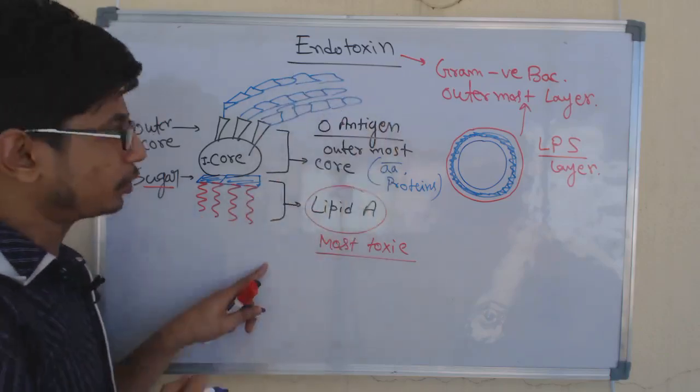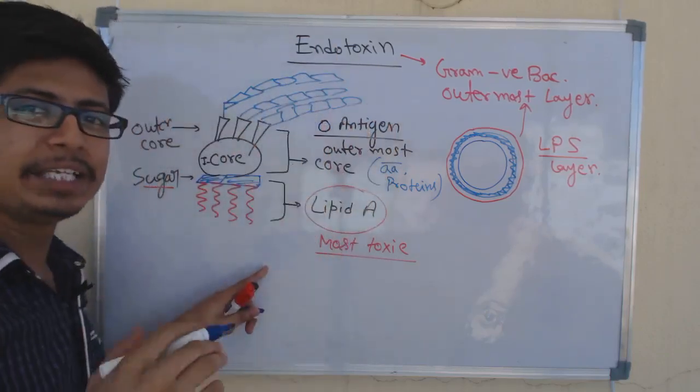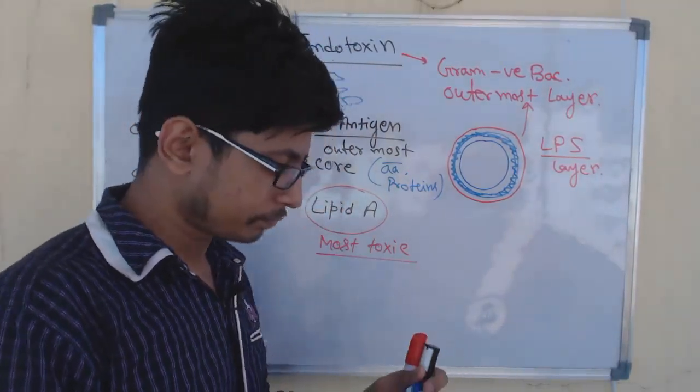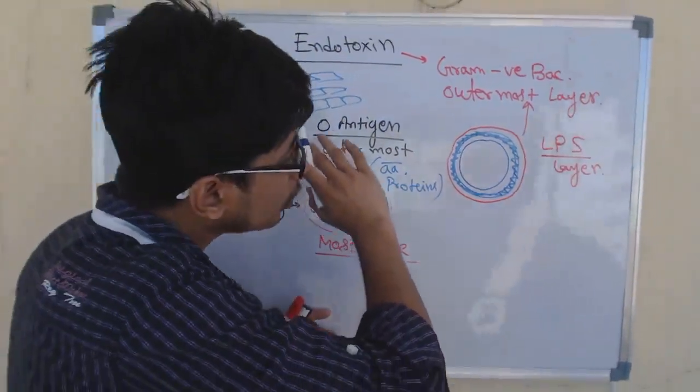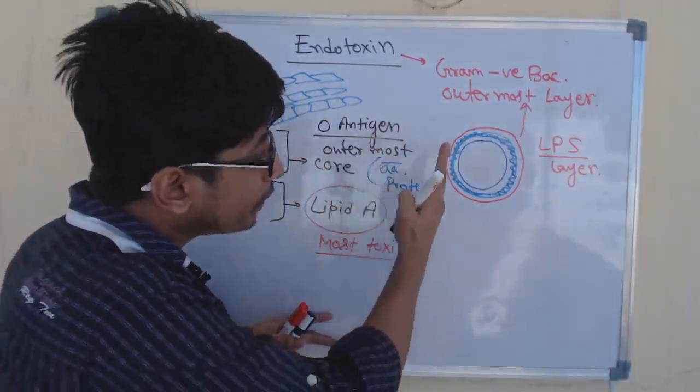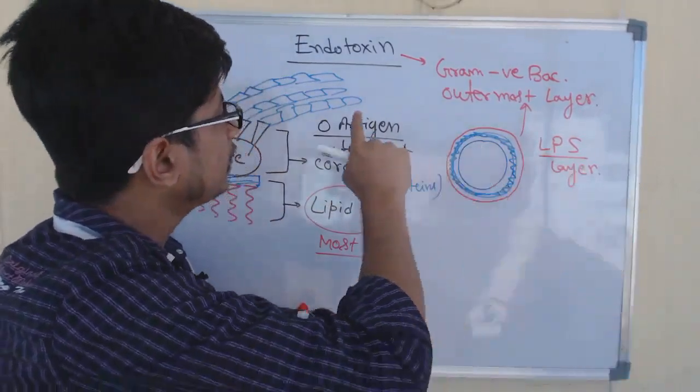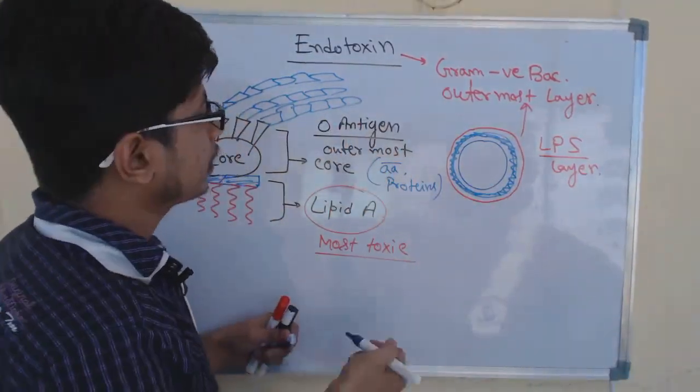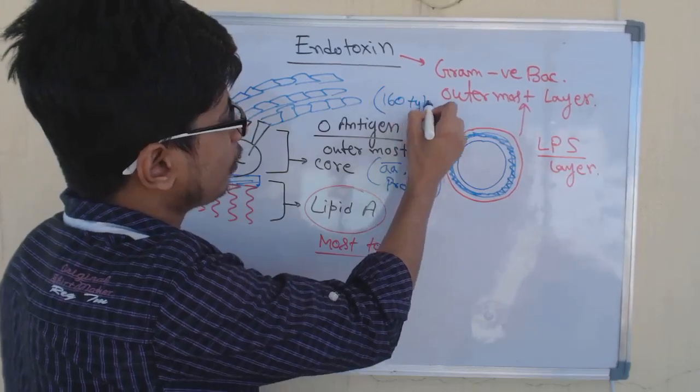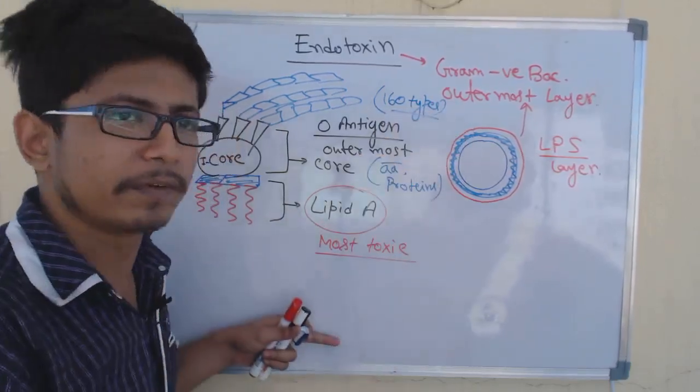But O antigen is always sugar molecules, and this O antigen is unique to each strain of the bacteria. This structure can only be seen in gram-negative bacteria. For different strains of bacteria, this O antigen is different. We can actually see up to 160 different types of O antigens normally found and isolated from different 160 strains—they are different from each other.